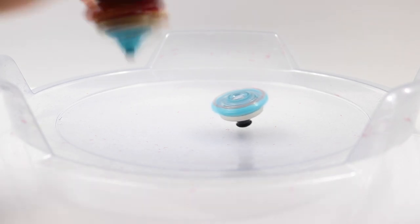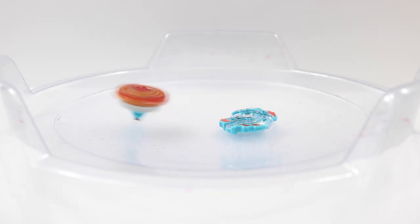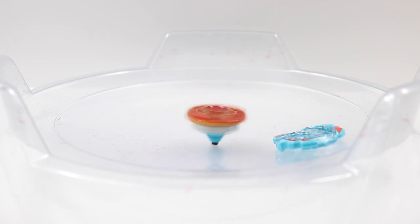All right then guys, so here we have the two Beyblades ready to battle with this Red Street Launcher. So I'm going to launch Roktavor first. So anyway, three, two, one, go shoot. Three, two, one, let it rip. Oh, Excalius just burst Roktavor like crazy.